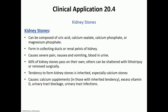Most kidney stones tend to pass on their own. Sometimes they're too big or stuck, and we can use shock waves to break them down into smaller particles that are easy to excrete — a process known as lithotripsy. If they're way too big for that, they would have to be surgically removed. Making kidney stones tends to run in families, especially the calcium salt ones. Causes include inherited tendency, increased calcium supplements, excess vitamin D intake, urinary tract blockage, and UTIs.